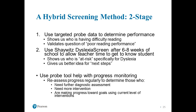My suggestion is to incorporate this type of two-stage screening method: first, look at targeted probe data to determine whether or not they have difficulty — this shows who is having difficulty reading and validates that first question. An example would be AIMSweb Plus — if you're using it and see after the second collection that the child is still continuing to have difficulty or even after the first is showing specific difficulty in areas related to reading, that's showing us the child is having difficulty. The second stage would be to use the Shaywitz Dyslexia Screen after 6–8 weeks, which allows us to look at who is at risk specifically for dyslexia.